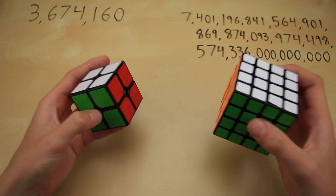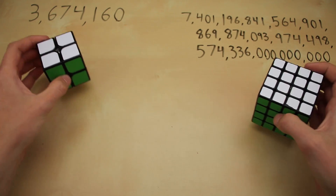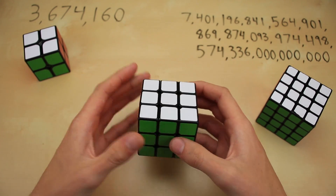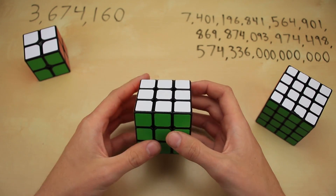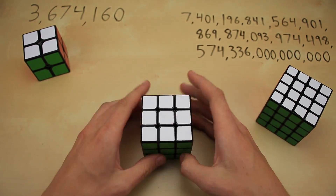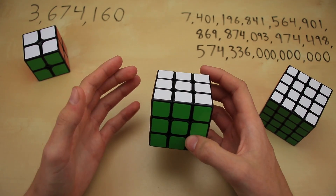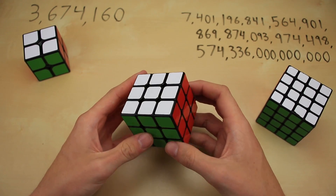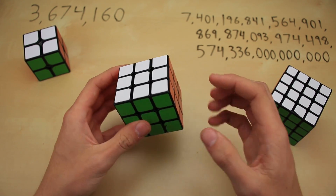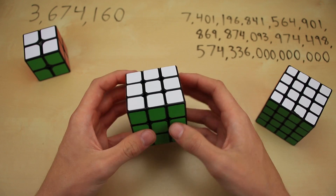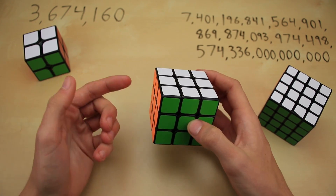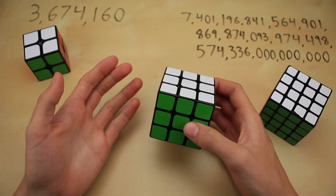I actually just recently made a video doing these exact same type of calculations but on a normal 3x3 Rubik's Cube, so I'm going to assume that you have watched that video before watching this one. If you haven't watched it yet, just click in the description down below — there'll be a link to it right there. I'm going to go over a lot of the basic concepts like the number of permutations and orientations of different pieces that you're going to need to know in this video.